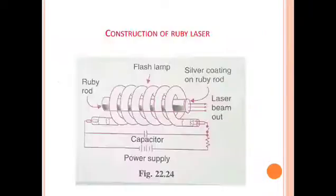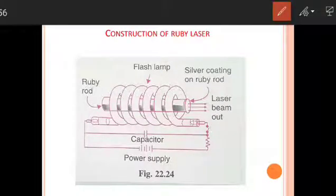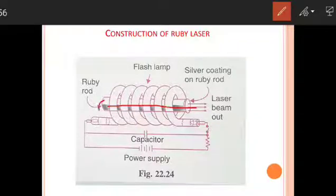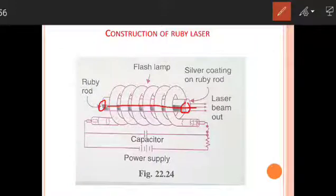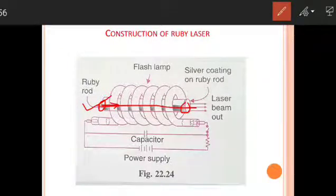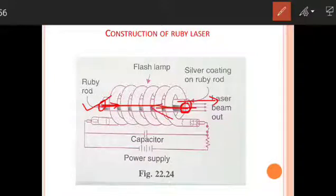Regarding the construction of a ruby laser, the ruby rod is taken in the form of a cylindrical rod of about 4 centimeters in length and 0.5 centimeters in diameter. One face is completely silvered and the other face is semi-silvered. The semi-silvered end achieves 10% transmission and 90% reflection.